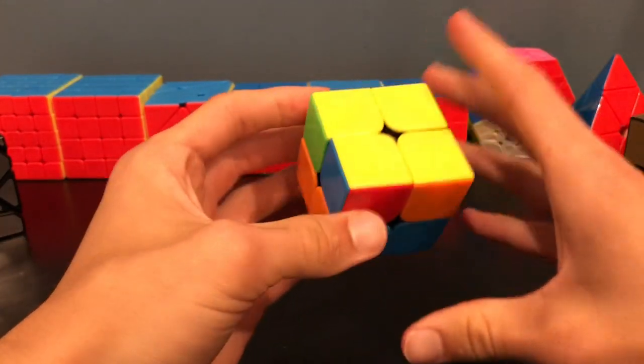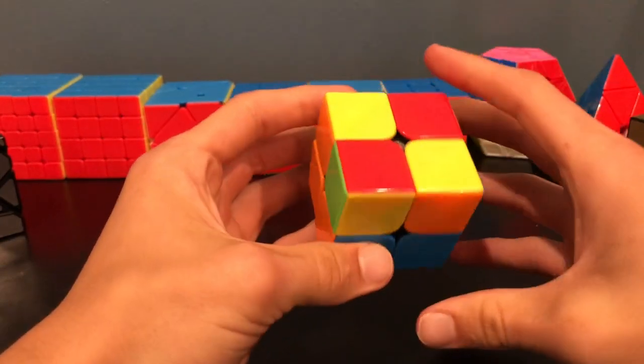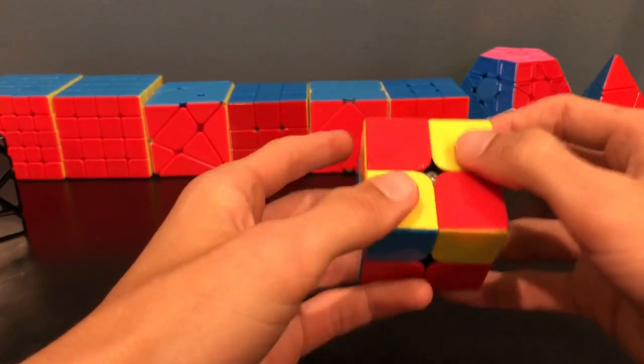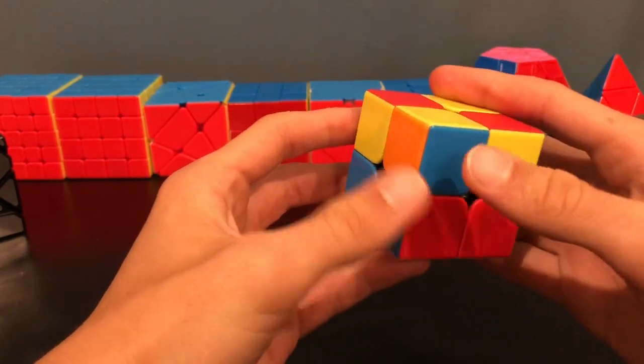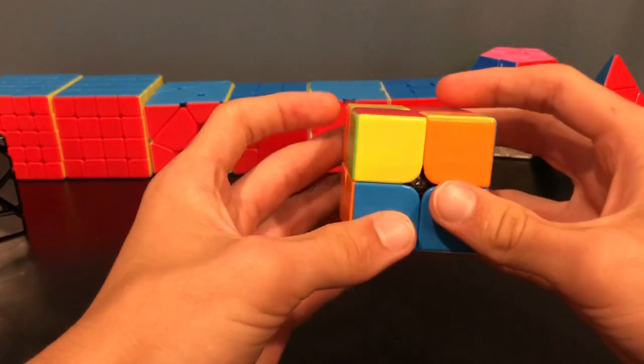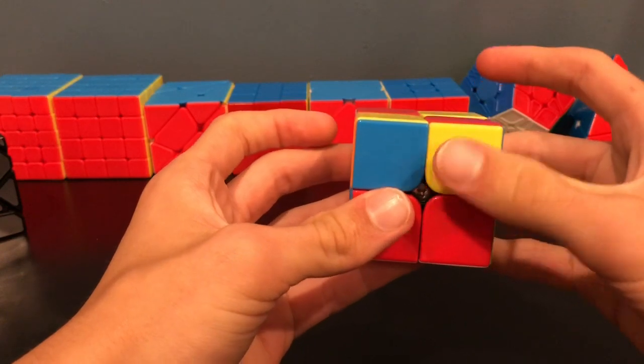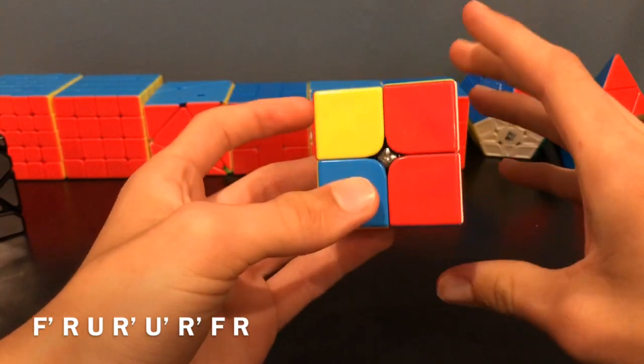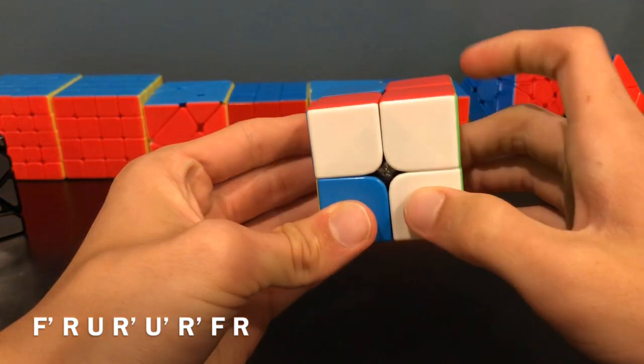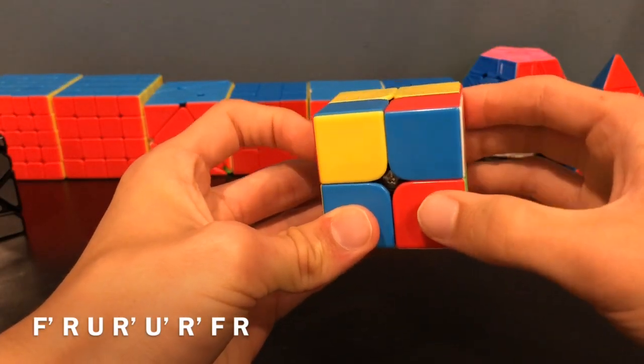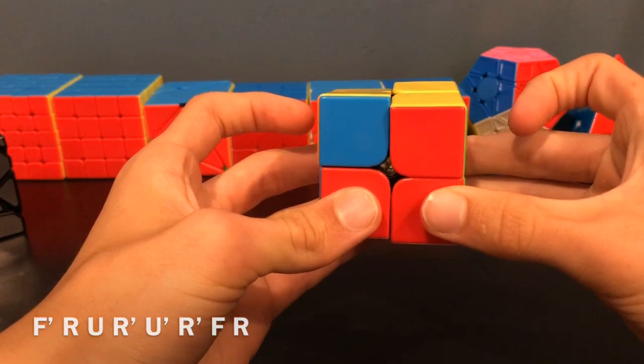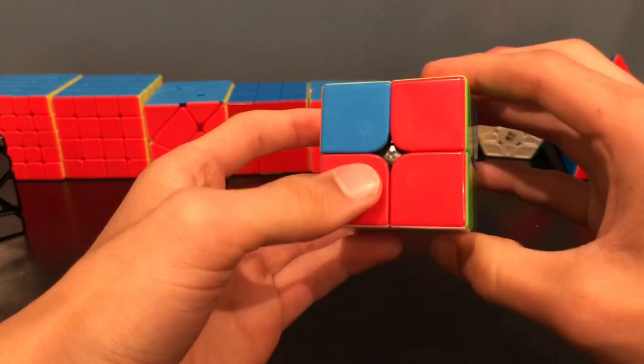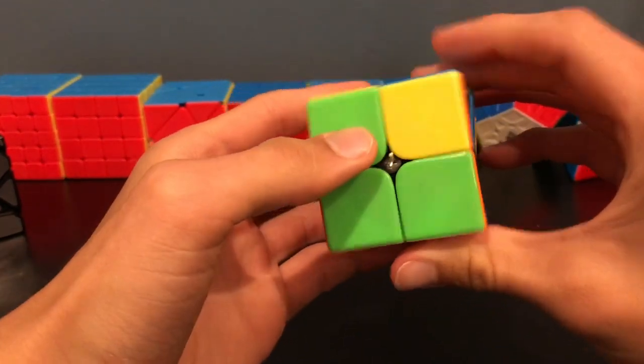Now, this next one is very similar. Let me set back. So, this is where you have two diagonal. It's the only one where you have two facing up diagonal, so it's easy to spot. So, you'll start with this dot facing towards you. If you did it here, then it wouldn't work. So this is the only one where the dot's facing towards you, and you'll do this. So, start with F prime, then it's very similar to the last one. R, U, R prime, U prime, R prime, F, R. So, it's just the same except you did the F at the beginning instead of here at the end. So, you have this one, then you have this one.